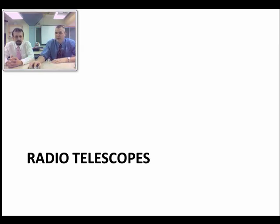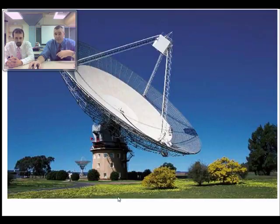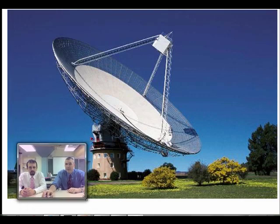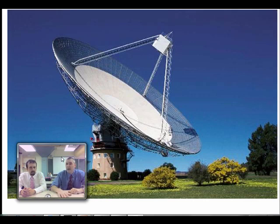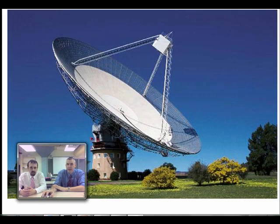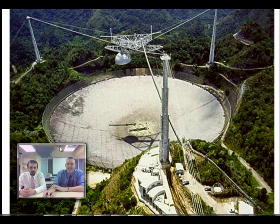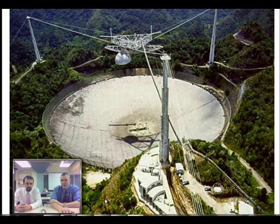We can also look at other parts of the electromagnetic spectrum using radio telescopes. These don't have to be shiny like an optical mirror — a metal dish can reflect radio waves. Here is a classic satellite dish, and this is the Parkes radio telescope in Australia, which was featured in the movie 'The Dish' — a great film to watch if you're interested in astronomy. And this is the Arecibo radio telescope in Puerto Rico.